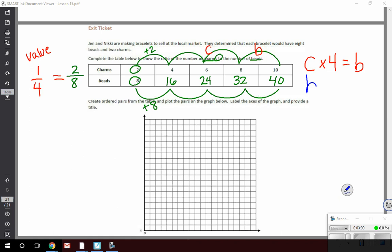I also know I can write that equation another way. If I'm given the amount of beads, say 40, if I divide that by four, I end up with my amount of charms. So there's a couple different ways that you can write an equation based on a ratio table. I like to find the value of the ratio table to do that.